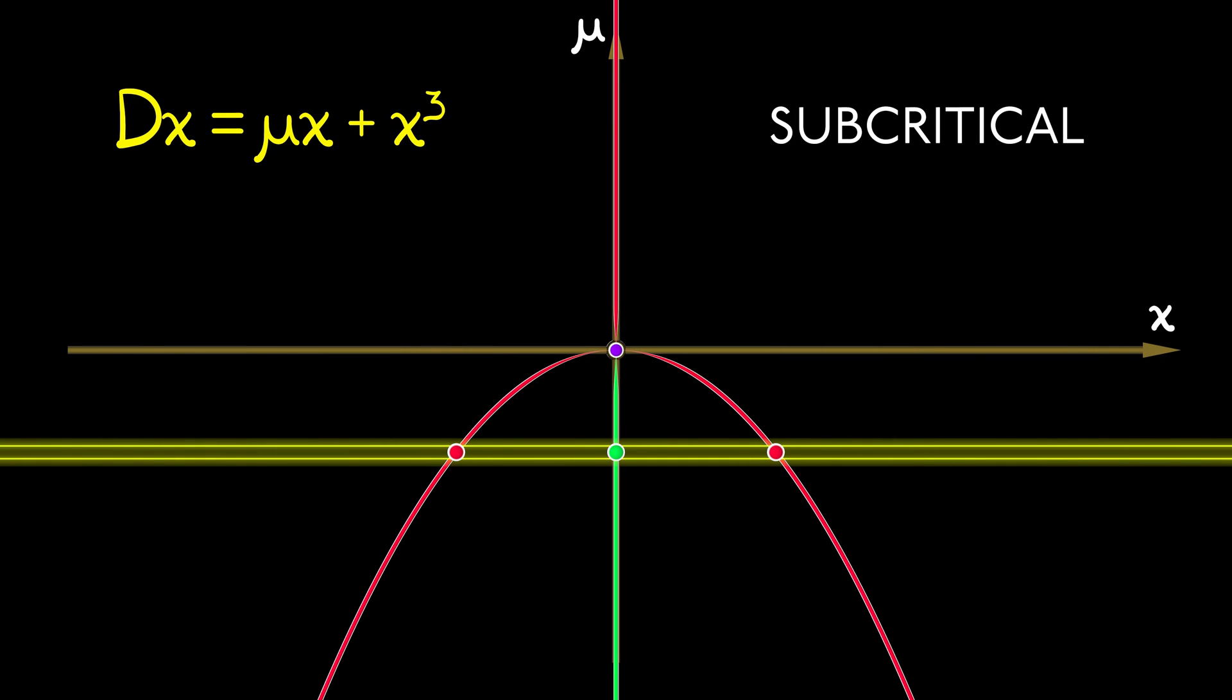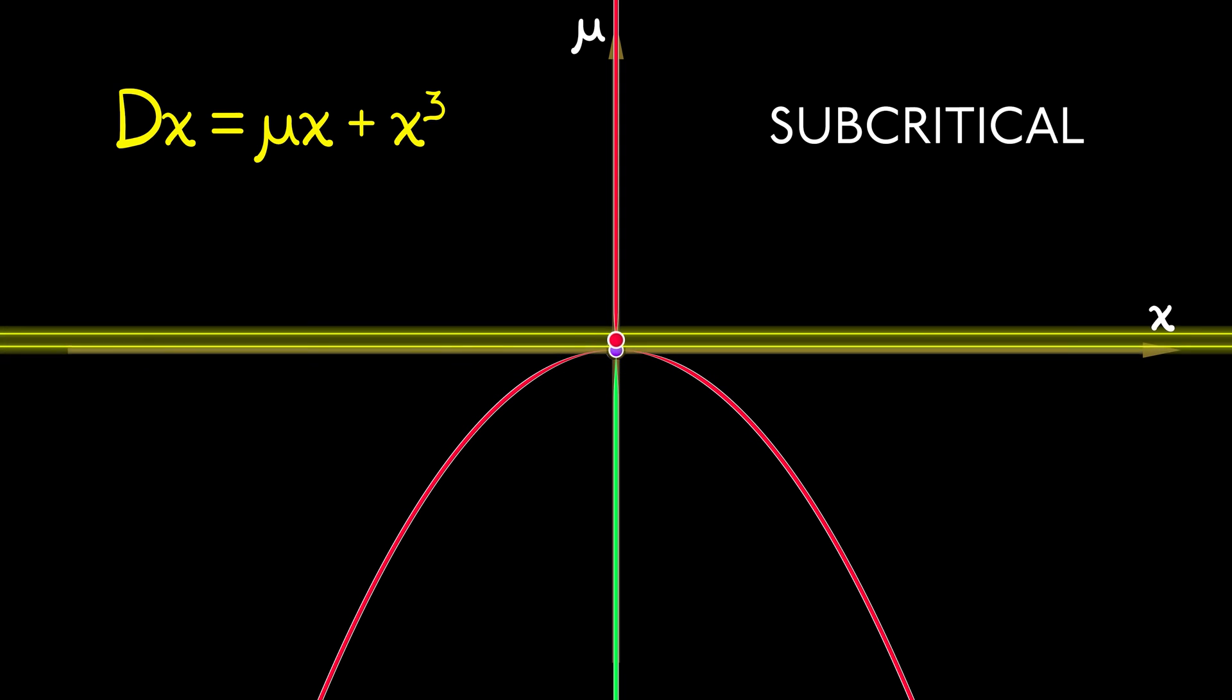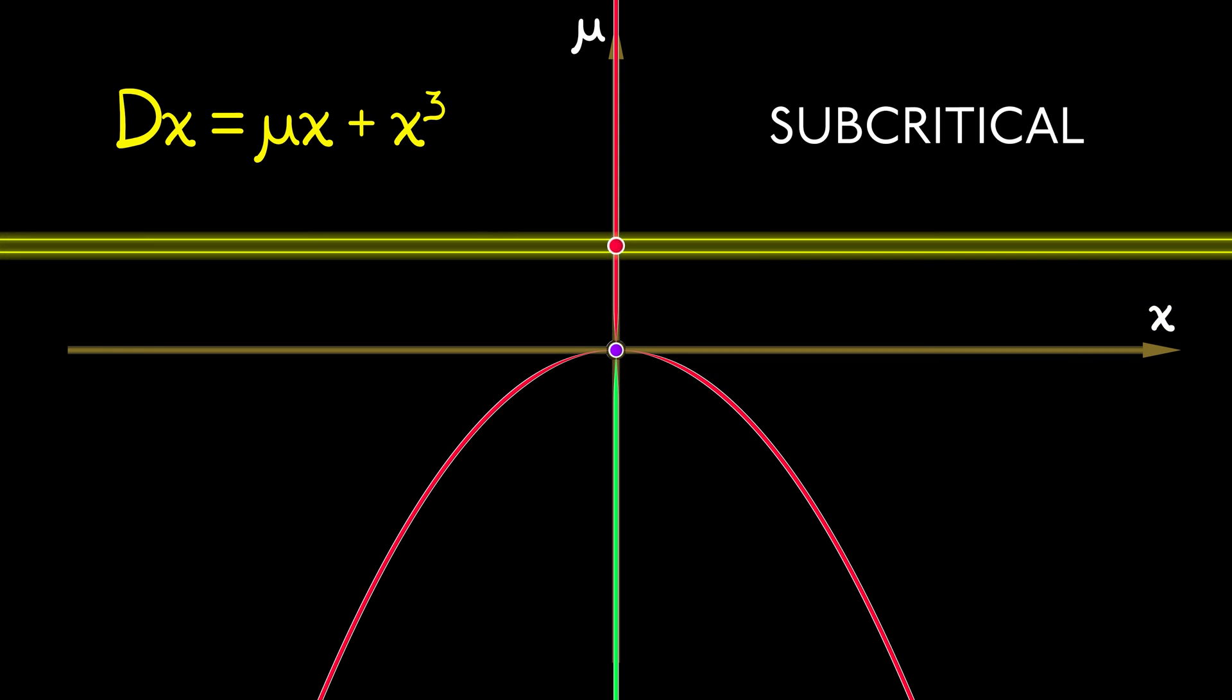On the other hand, if you're at a subcritical bifurcation and you start off at a stable equilibrium, you don't know that there's all this instability around you. So what do you do? You turn the dial or stuff happens, your parameter changes, and now you lose stability.